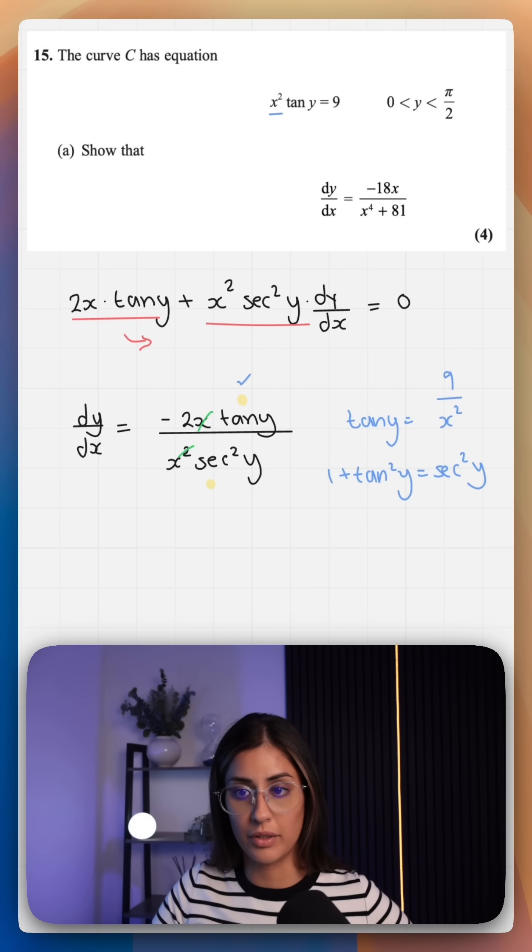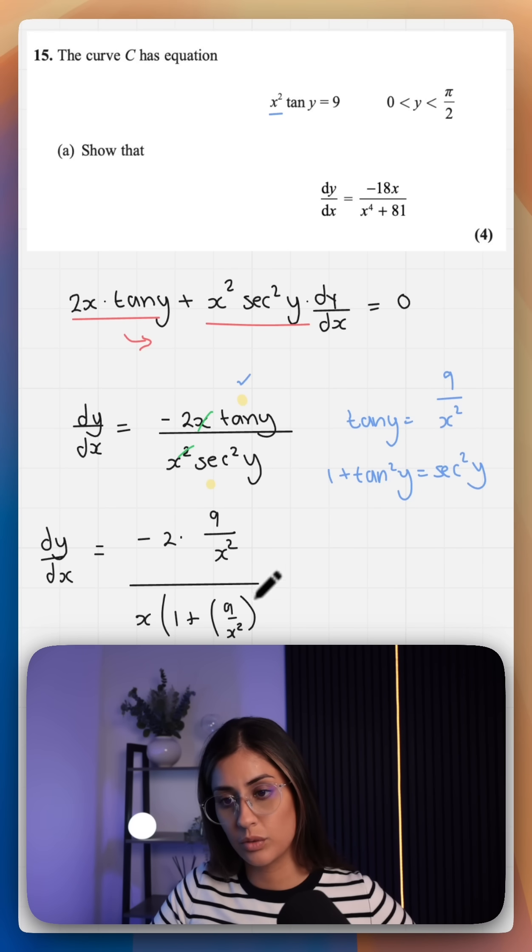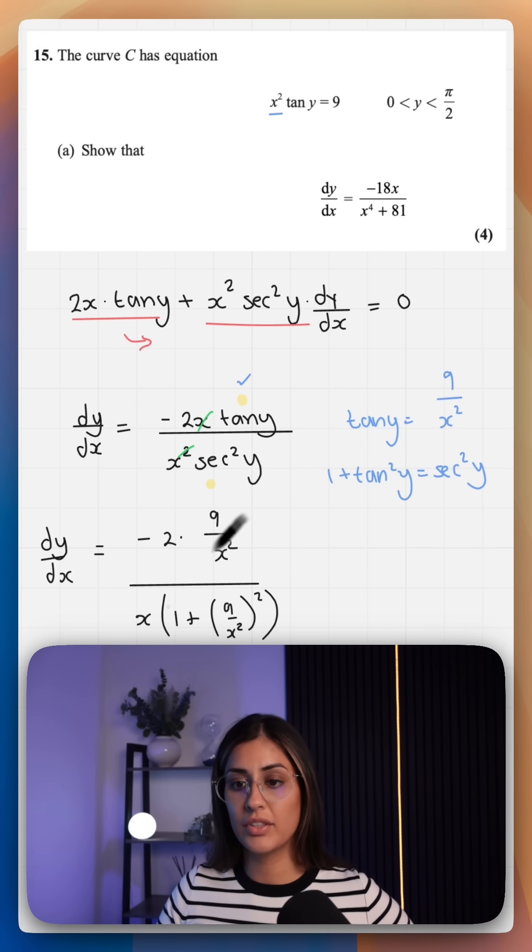So we've got x on the top and x squared on the bottom. Those two will cancel out. Tan y is 9 over x squared, all over x times sec squared y, which is 1 plus 9 over x squared all squared. This looks a bit confusing for now.